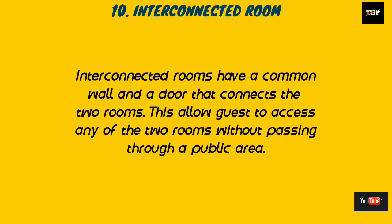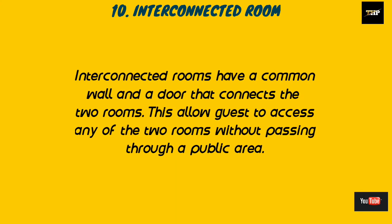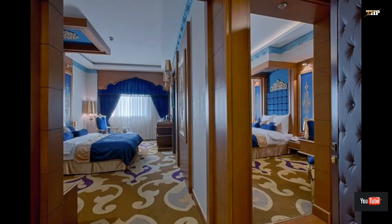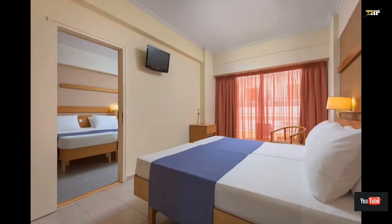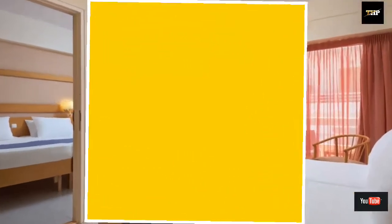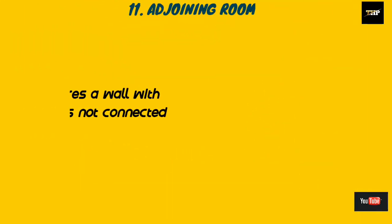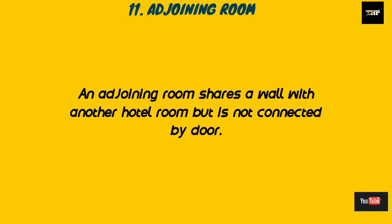The next is the interconnected room. Interconnected rooms have a common wall and a door that connects the two rooms. This allows access to either of the two rooms without passing through the public area. This room is basically for a group of people or for crew members.